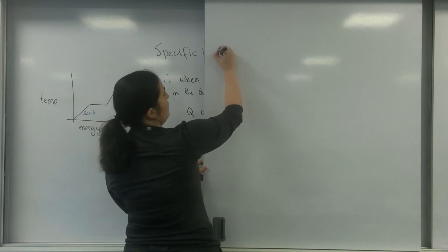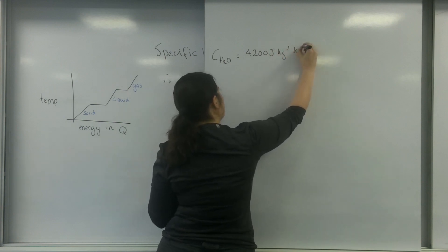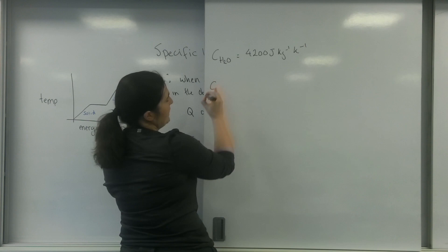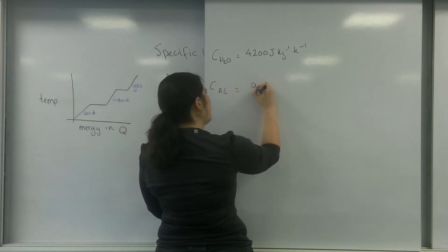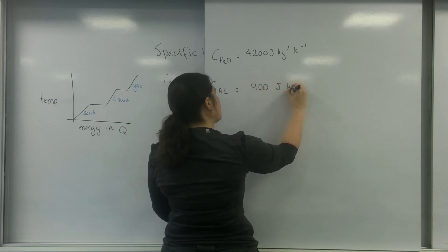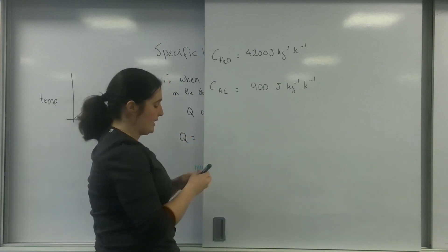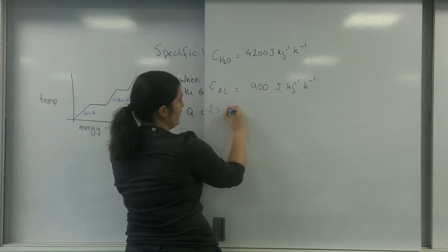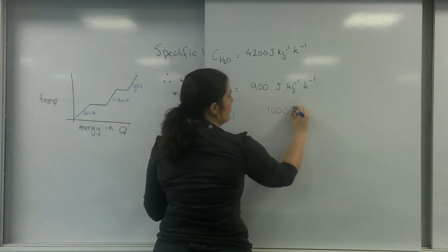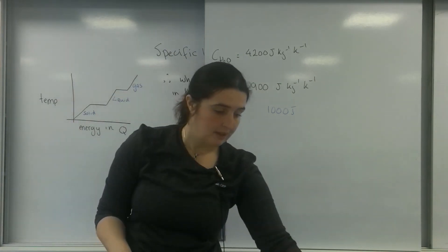Let's say I have the specific heat capacity of water is 4,200 joules per kilogram per Kelvin. And I've got the specific heat capacity of aluminium, which is about 900 joules per kilogram per Kelvin. So if I had two and a half kilos of stuff and I put in a thousand joules, let's see what happens, what kind of change of temperature I'm looking at here.